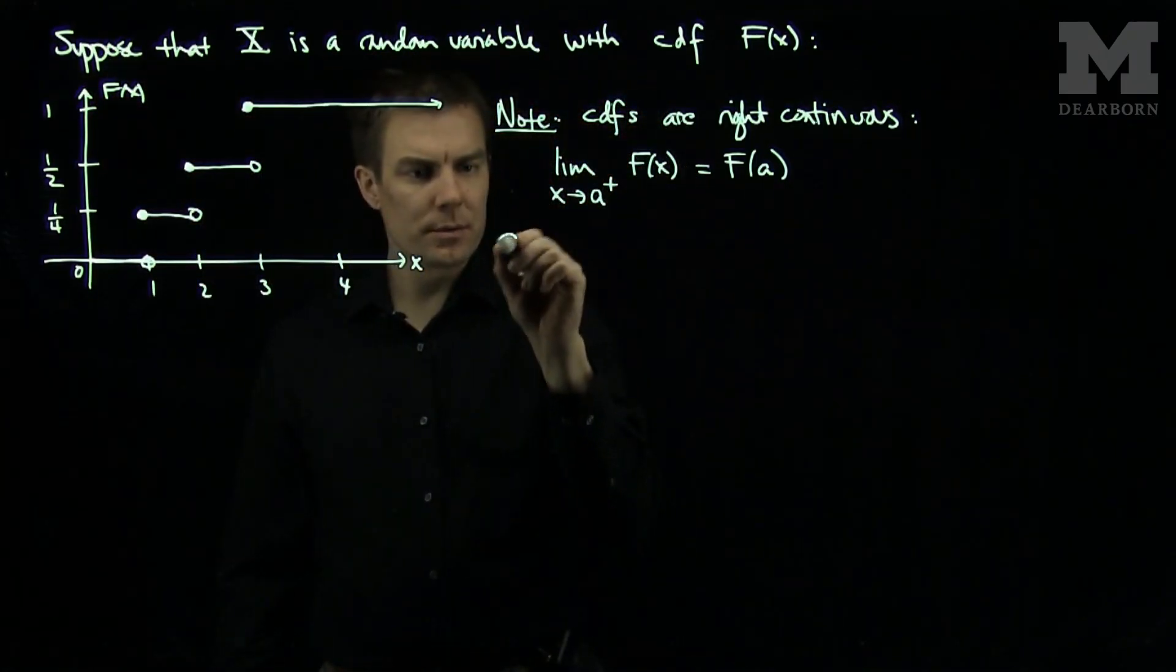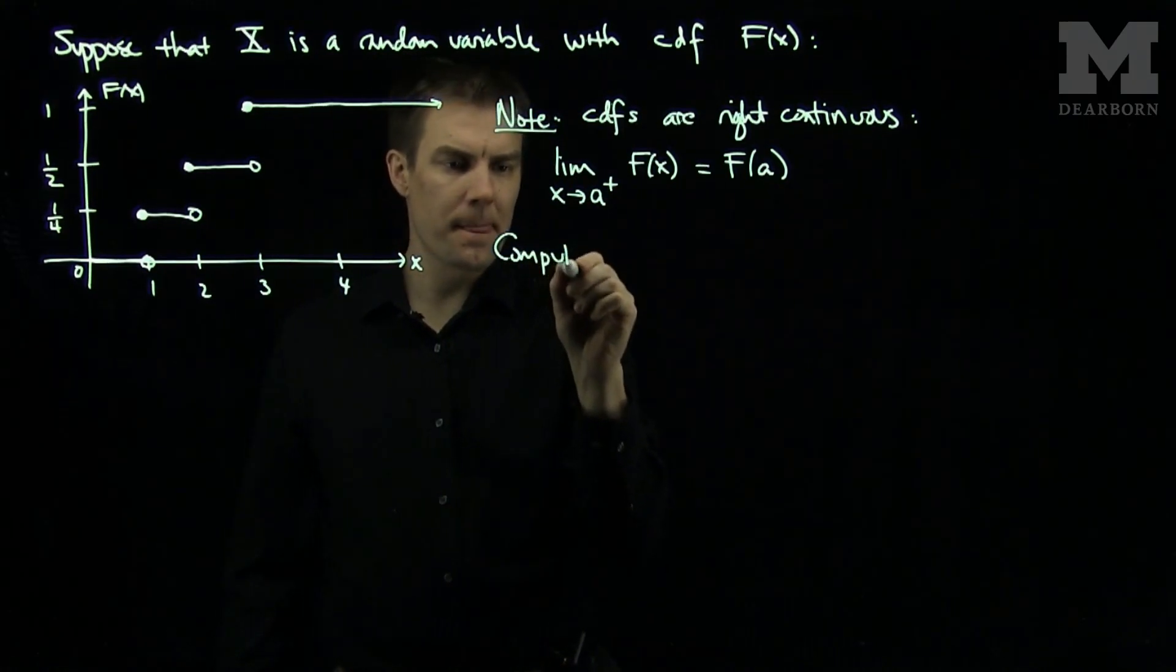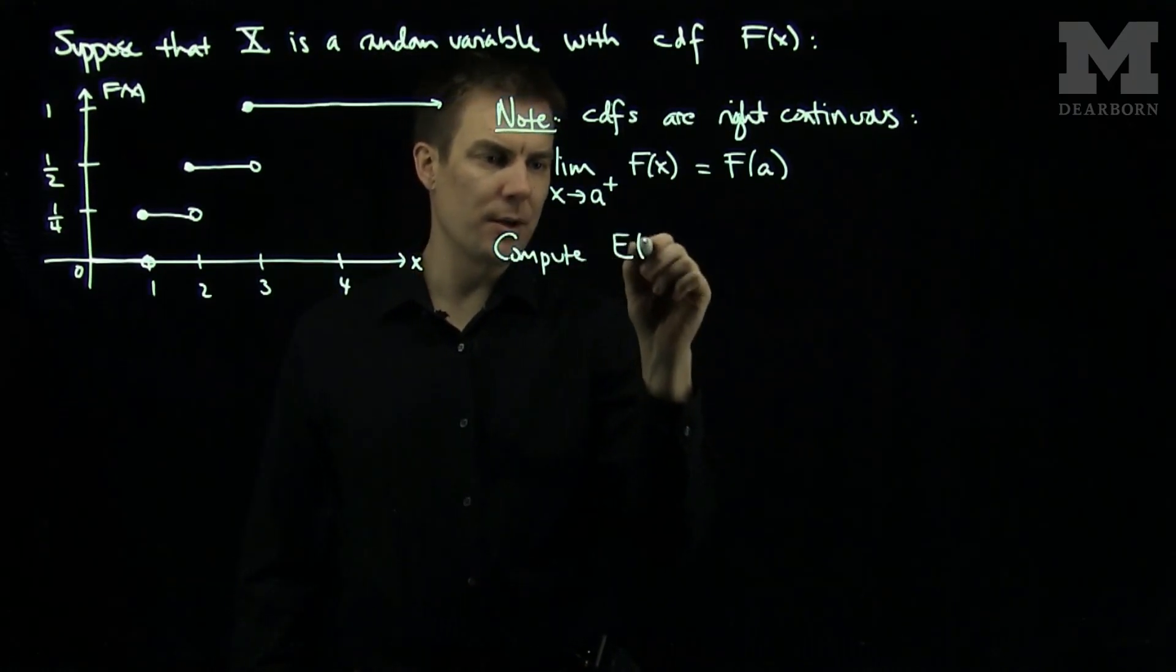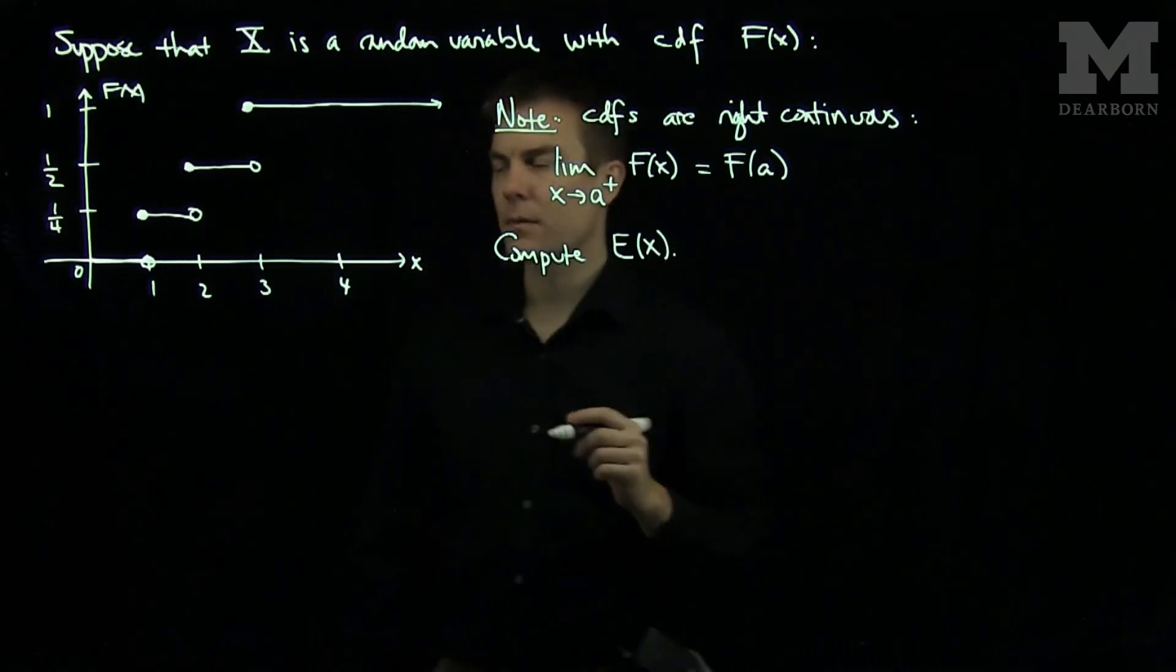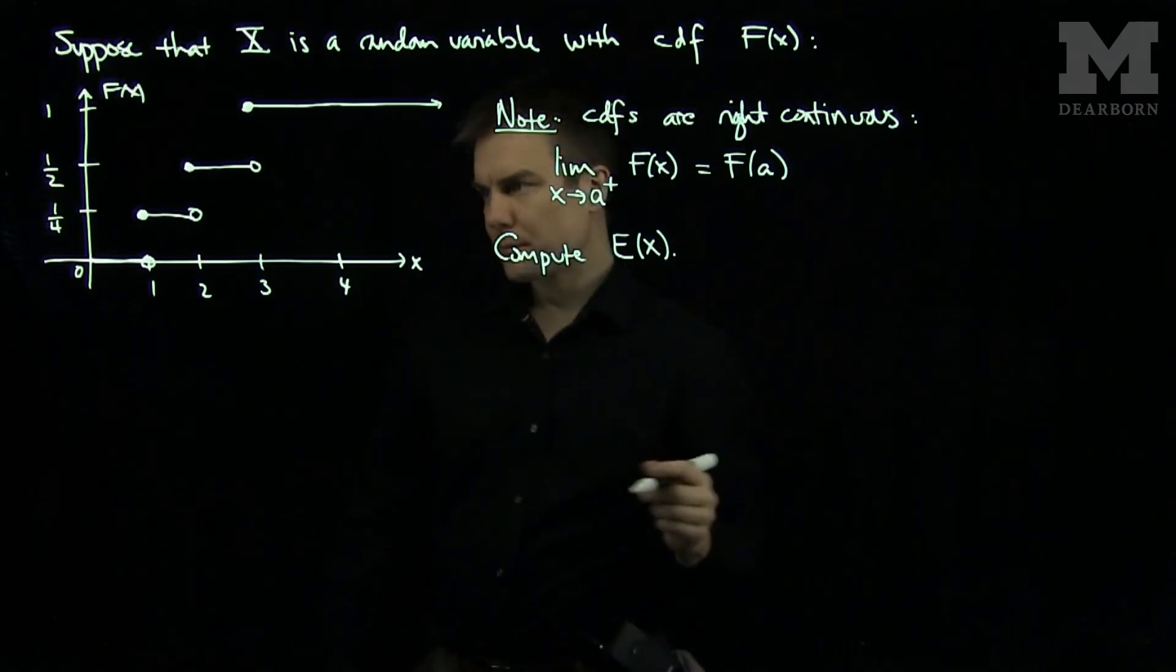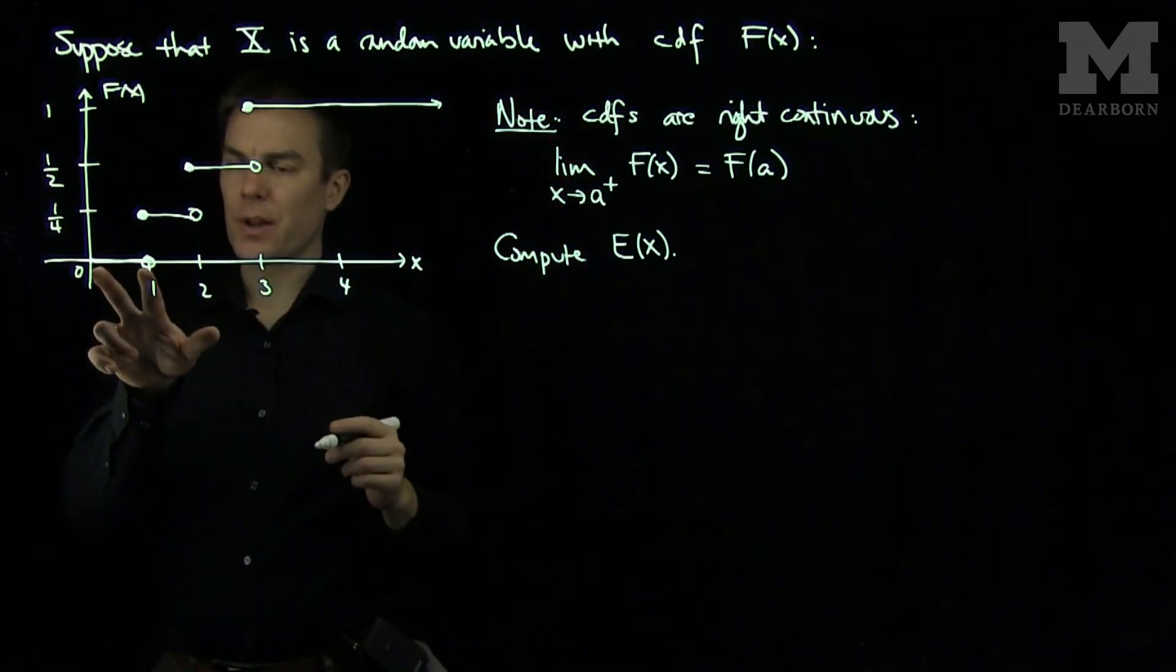Now, let's compute for this random variable the expected value of X. Well what do we know? We know that when x is between 0 and 1, the probability is 0.